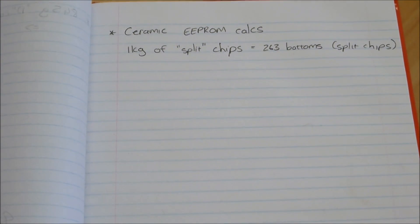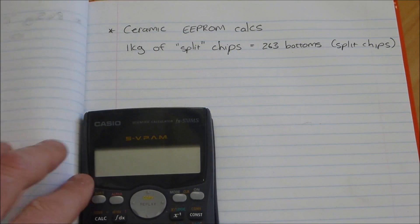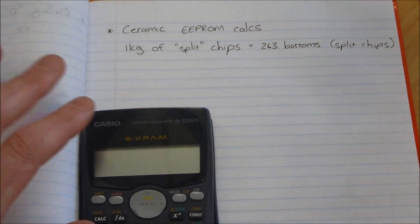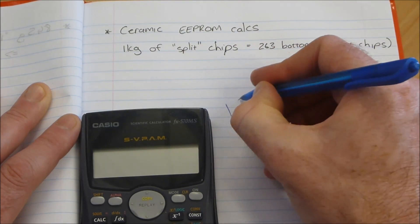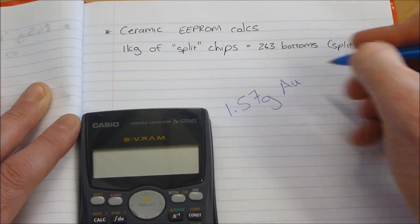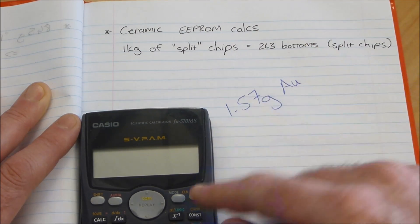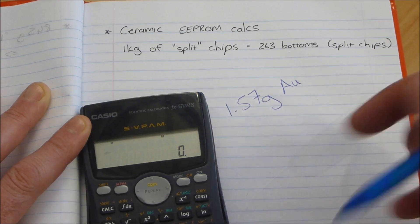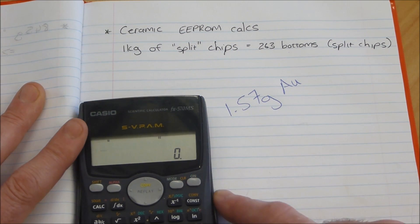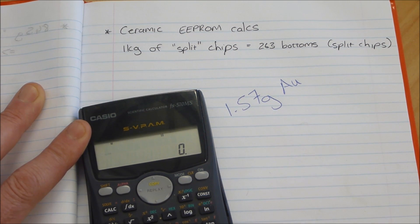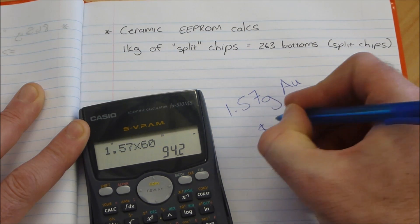Let's do some quick live math here for you guys. Hopefully you can read that. Those 263 chips gave us 1.57 grams of gold. Let's work out the total dollar value first—it's going to make life a bit easier. So we'll use in my case 60 dollars a gram. So 1.57 times 60, that is New Zealand dollars 94 dollars and 20 cents.